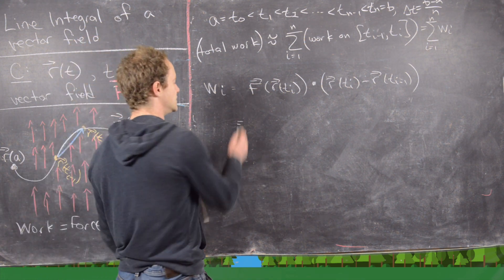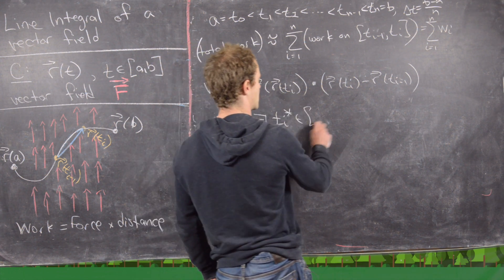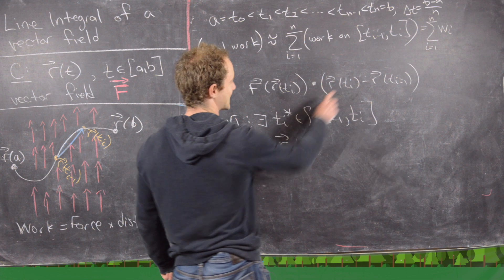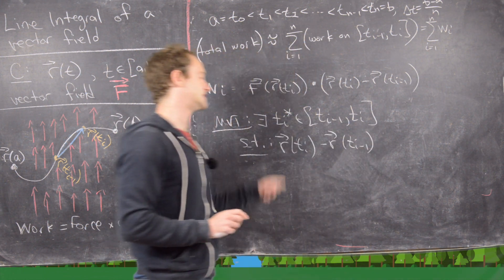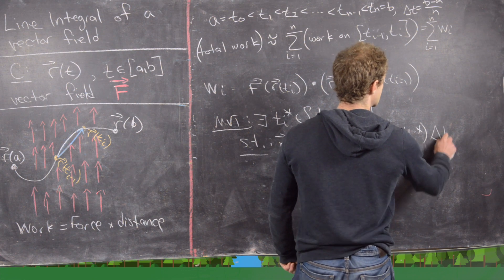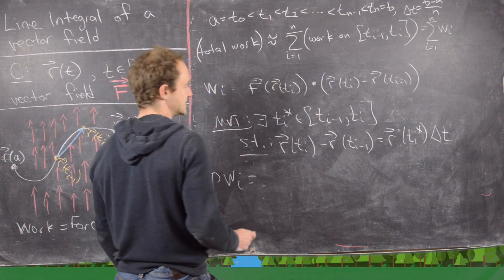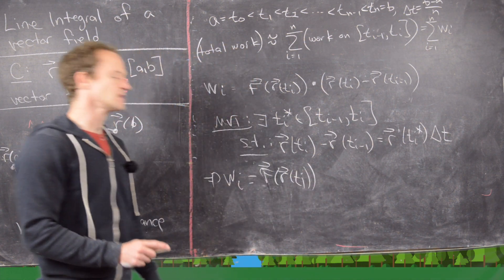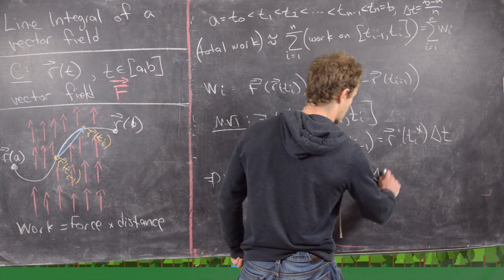The next step is to use the mean value theorem. It says there exists some Ti* in the interval [T(i-1), Ti] such that the average change equals the instantaneous change. In other words, R(Ti) minus R(T(i-1)) equals R prime evaluated at Ti* times delta T. This tells us the total work is F evaluated on the curve dotted with R prime at Ti* times delta T.